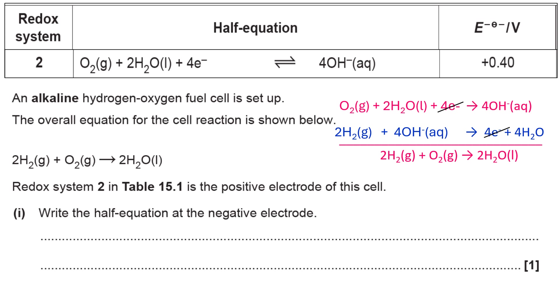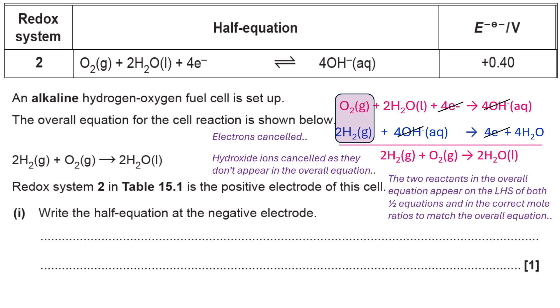So as always, I start by cancelling out the electrons. Then I cancel the OH-s. And then finally, looking at the left hand side of my two equations combined, I've got the hydrogen and the oxygen in the correct mole ratios. I find them in my overall cell reaction.